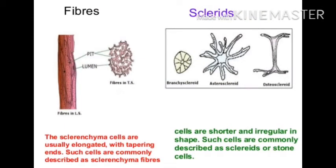The sclerenchyma cells are of two types: one is fibrous and the second is sclereids. The sclerenchyma cells are usually elongated with tapering ends — such cells are commonly described as sclerenchyma fibers. Cells that are shorter and irregular in shape are commonly described as sclereids or stone cells.